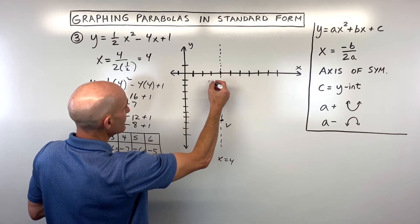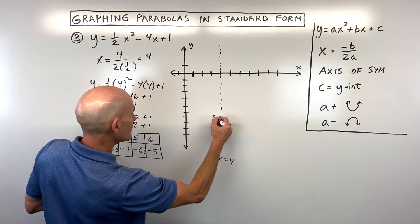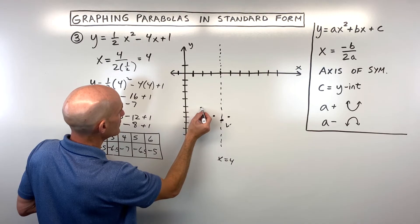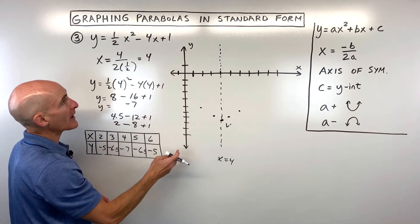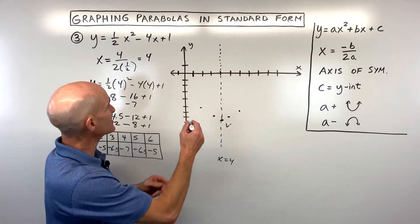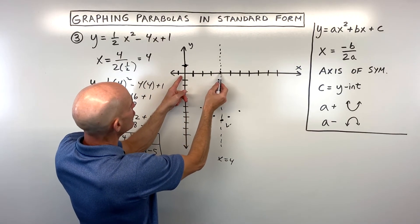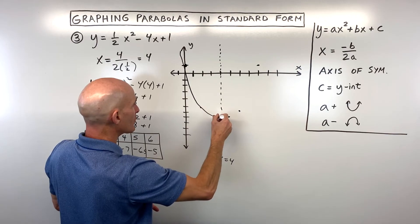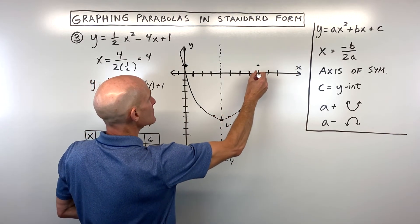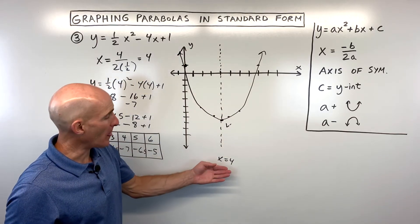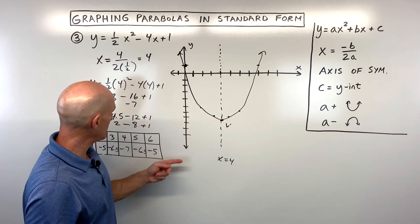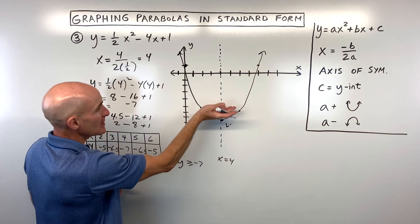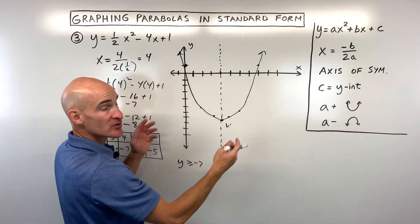Plotting (3, negative 6.5) and reflecting over the line of symmetry, then (2, negative 5) and reflecting it. The y-intercept is the c value, which is 1, and reflecting that over the line of symmetry gives another point. Now we have a good sketch of the graph. The axis of symmetry is x equals 4. This graph has a minimum value of negative 7 — that's how low it goes — which also tells us the range is y greater than or equal to negative 7. The domain is all real numbers since the graph extends left and right forever.